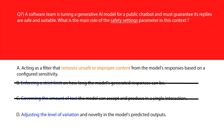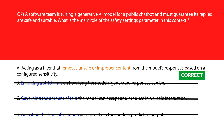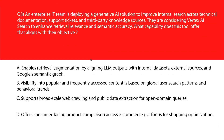Option D says adjusting the level of variation and novelty in the model's predicted outputs. This function controls the diversity and unpredictability of the model's responses, which relates to creativity management rather than safety filtering — reject it. We'll lock option A as the right answer.